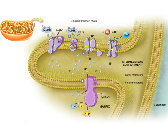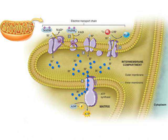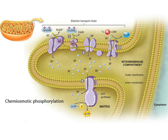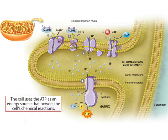Now focus your attention on the ATP synthase protein at the bottom of the figure. If you follow the black arrow through ATP synthase, you'll see that the hydrogen ions enter ATP synthase from the intermembrane compartment and move through it to the matrix by facilitated diffusion. Since the hydrogen ions are moving from a high concentration to a low concentration, they're going from a high energy state to a low energy state and are therefore releasing energy. In a process called chemiosmotic phosphorylation, ATP synthase uses this energy from the hydrogen ion gradient to add a phosphate to ADP, producing ATP. The cell uses the ATP as an energy source that powers the cell's chemical reactions.